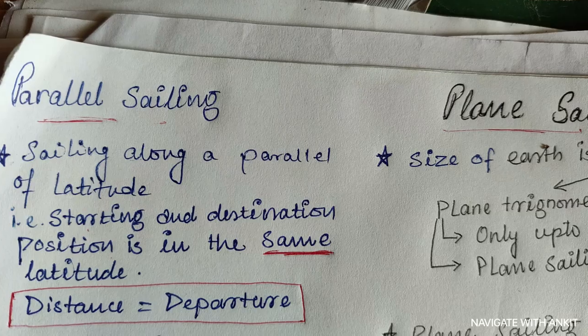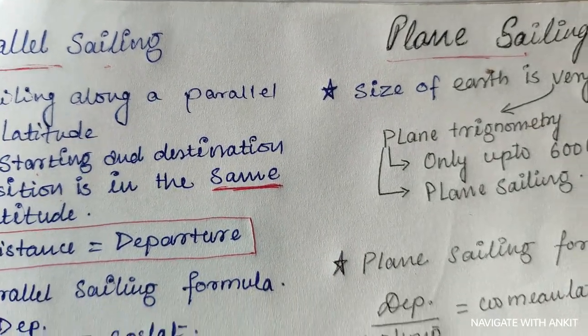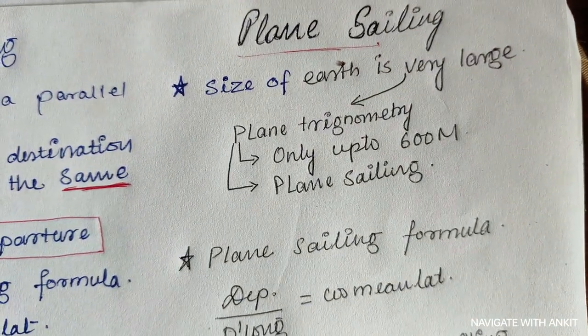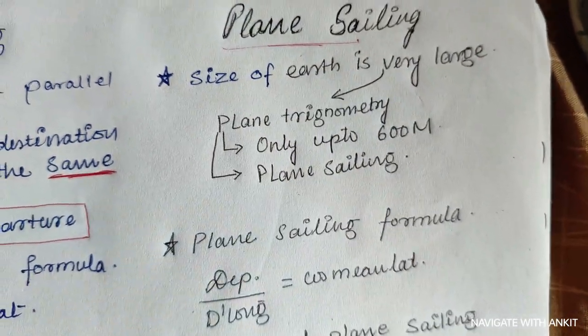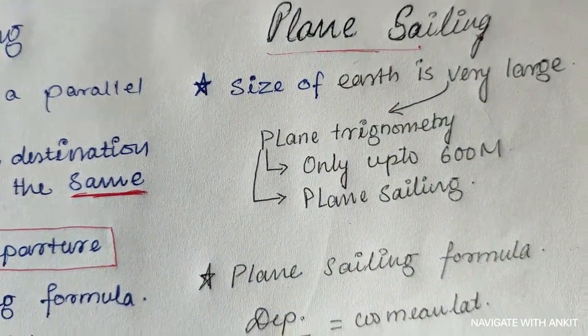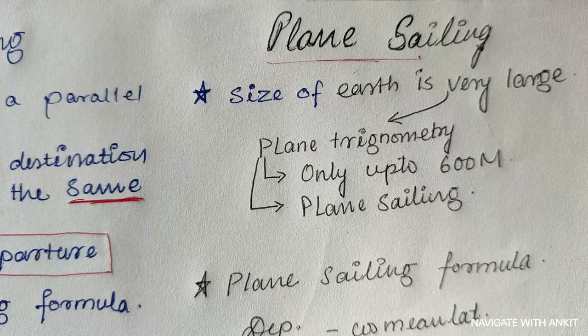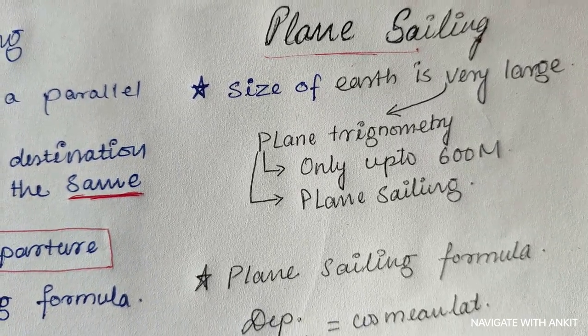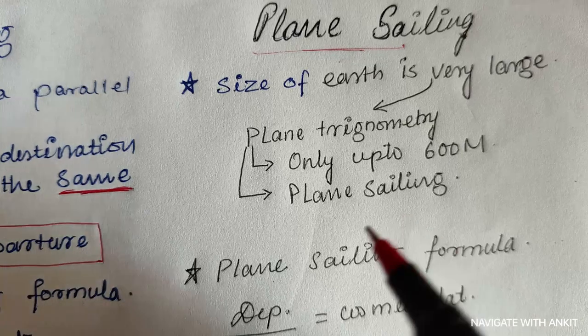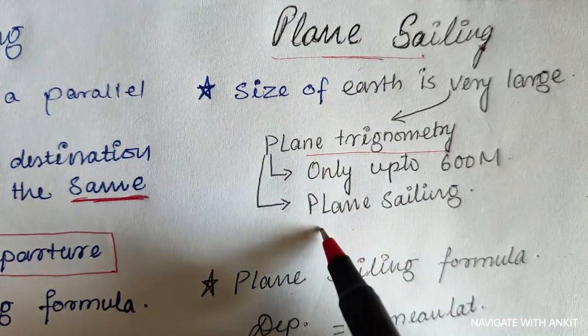Now plane sailing. As we all know, the size of the earth is very large, so if we consider a small surface on the earth then we can consider it as flat and use plane trigonometry. When we use this plane trigonometric formula, we call it plane sailing.